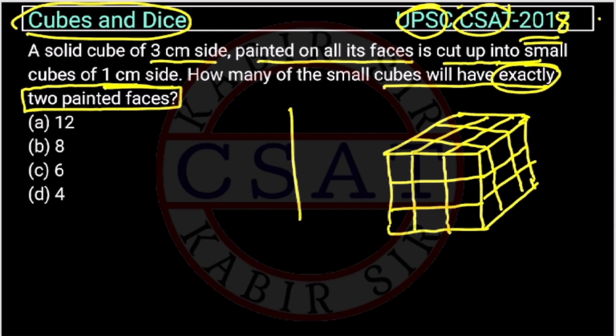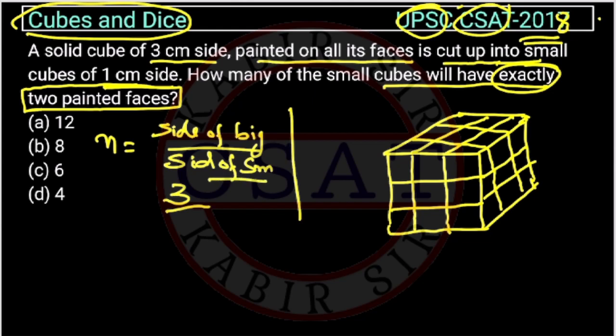First of all, we need to find n. n is equal to side of bigger cube upon side of smaller cube. The side of bigger cube is 3 centimeter, side of smaller cube is 1 centimeter, so n is equal to 3.